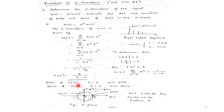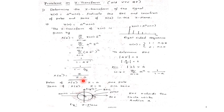To determine the poles of X(Z): poles come from the denominator polynomial. If I substitute the pole value in the denominator, I should get infinity. For X(Z) equal to Z by Z minus A, there is one pole at Z equal to A — substituting Z equal to A gives Z by 0, which is infinity. Similarly, for zeros: substituting Z equal to 0 gives the numerator as 0, so there is one zero at Z equal to 0. So we have one pole and one zero.